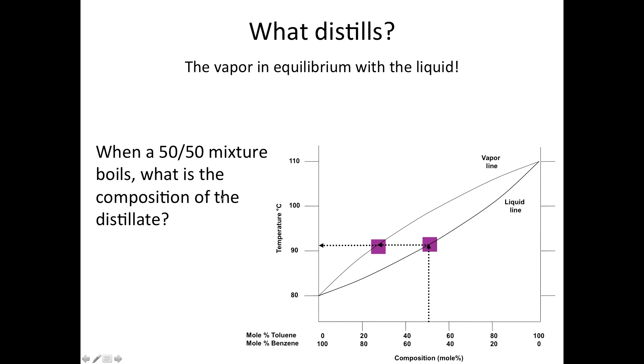I also want to be able to predict what's going to distill. So what is that vapor in equilibrium with the liquid? For that, this additional line is on the graph, and it's labeled vapor line, but it means the composition of the vapor in equilibrium with that liquid at a particular temperature. Where we followed this over and found the boiling point of 92, at 92 degrees, the composition of the vapor is given by the vapor line. And you can see that that is about 75% benzene. So this is how we can describe the first drops that come off during a distillation.